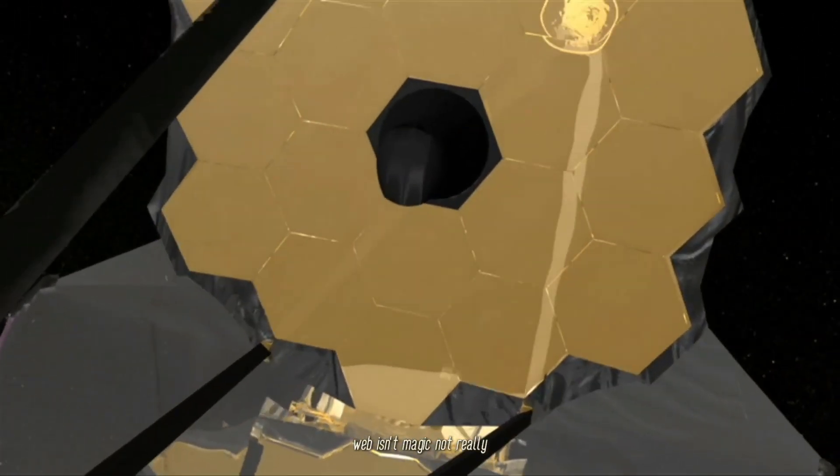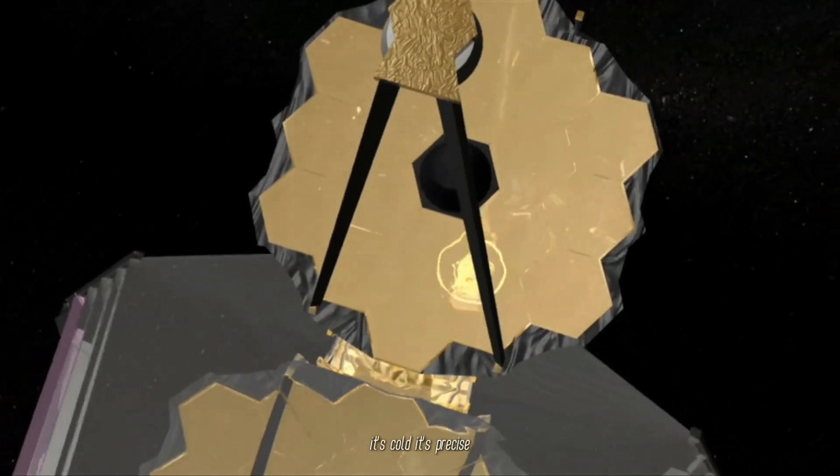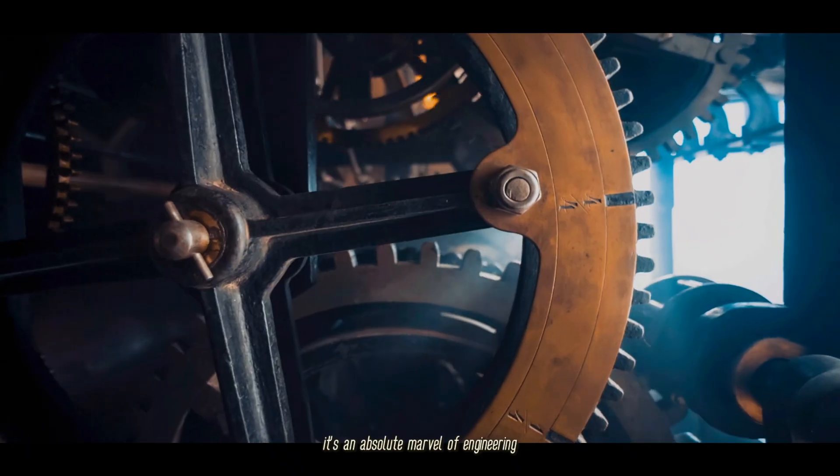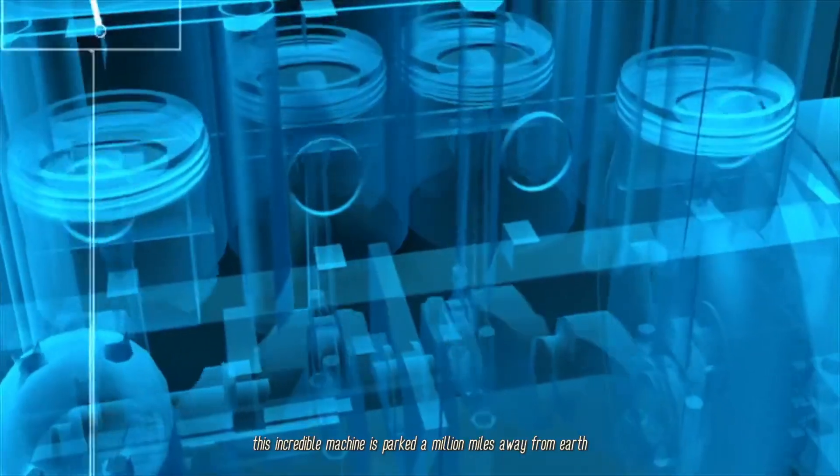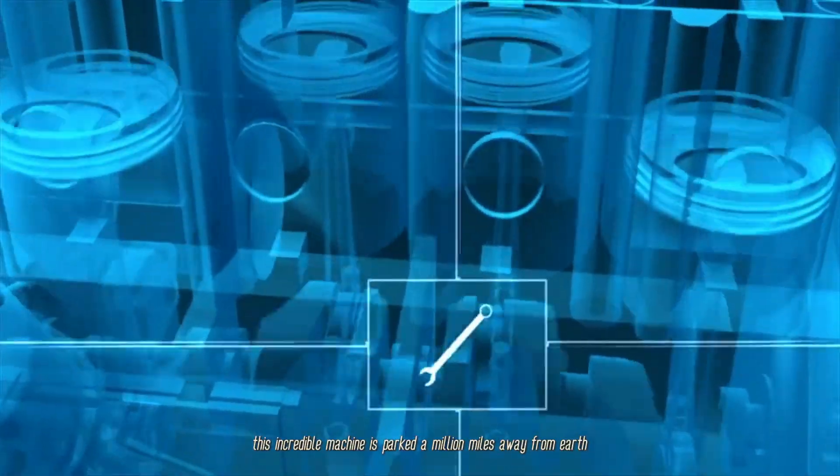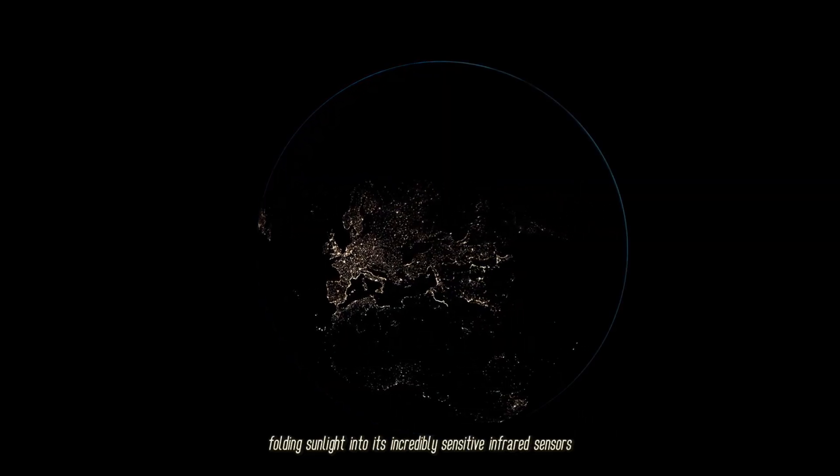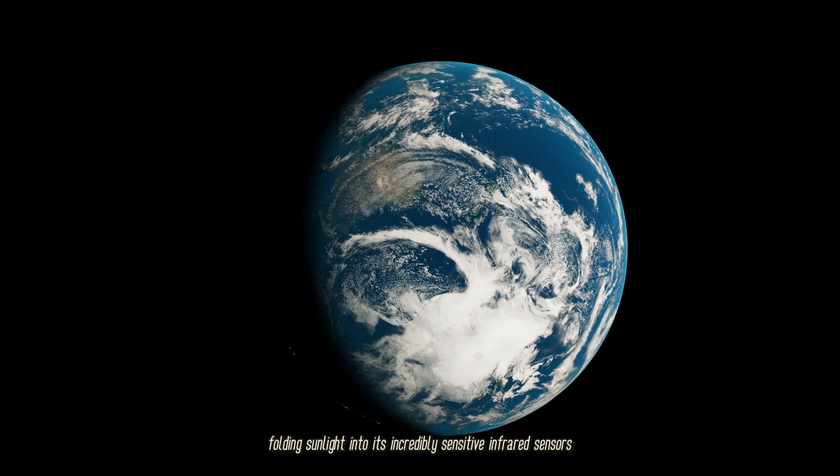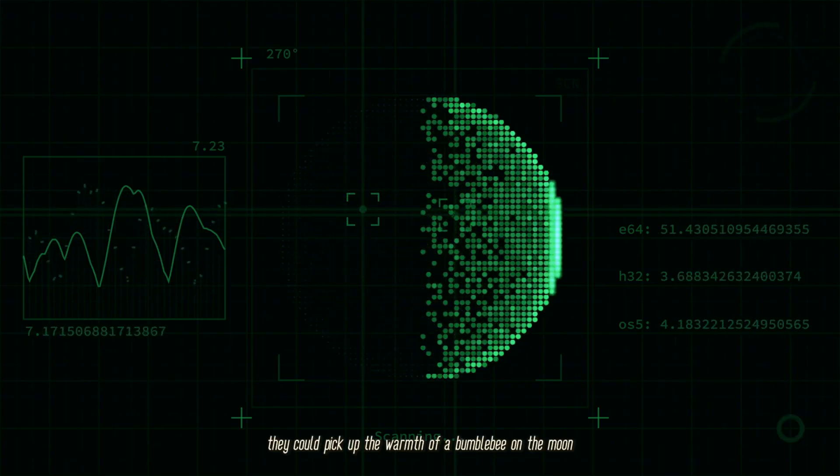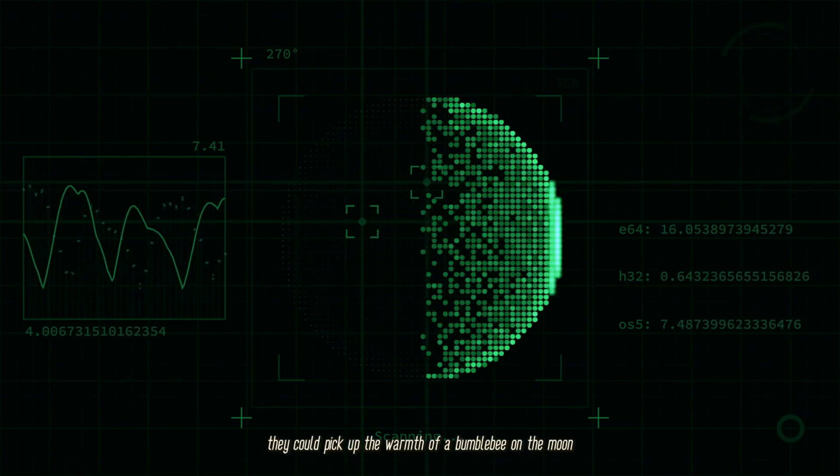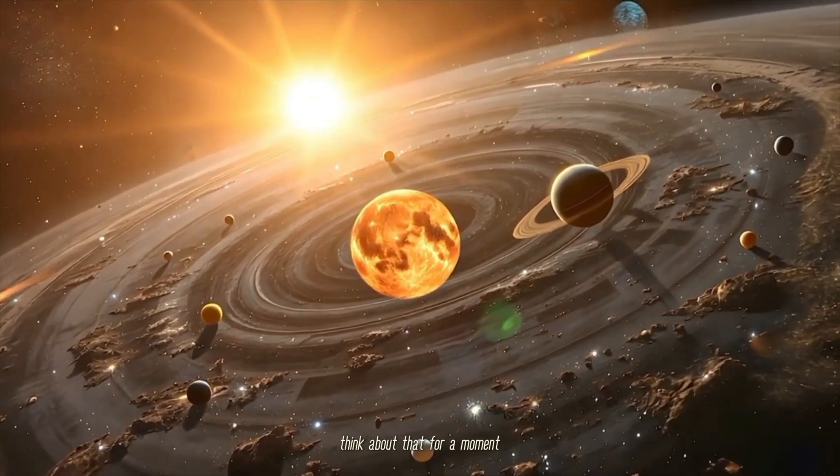Webb isn't magic, not really. It's cold, it's precise, it's an absolute marvel of engineering. This incredible machine is parked a million miles away from Earth, tirelessly folding sunlight into its incredibly sensitive infrared sensors. Sensors so finely tuned they could pick up the warmth of a bumblebee on the moon.